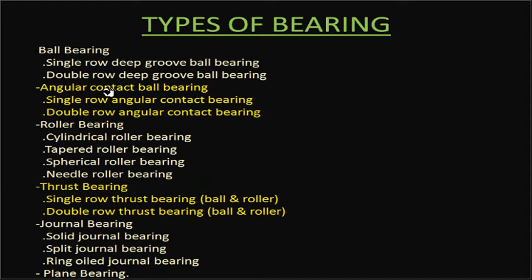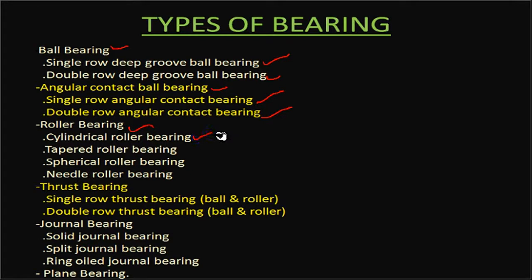Under ball bearings, available types include single-row and double-row deep groove ball bearings, and single-row and double-row angular contact ball bearings. Under roller bearings, there are cylindrical, taper, spherical, and needle roller bearings. Thrust bearings are available as single-row or double-row thrust ball bearings, and may use either balls or rollers as rolling elements.